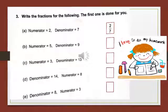See here, already one is done for you. Numerator 2, denominator 7. So how will you write it? As 2/7, 2 by 7. The same way you have to solve the remaining ones.